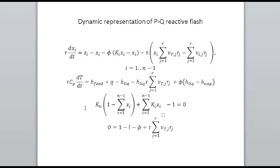You can see that this is an index two system because the variables here are your liquid mole fractions x, your vapor fraction phi, and your temperature T. If you look at that algebraic expression, your vapor fraction is missing from it — the algebraic equation being the vapor-liquid equilibrium one. In other words, how do you get an expression for vapor fraction?